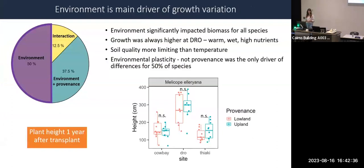The main result - which we might have expected - is that the environment or planting site was the main driver of growth variation. However, 50% of species were only impacted by the environment with no provenance-level differences. For example, Malachopilariana showed much higher growth at the DRO - the lowland, warm, wet, high-nutrient site - compared to the other two sites, and this was a similar trend for all species. Some species varied slightly between Cow Bay and the Yaki site, but for the majority there were no differences between those two sites, which suggests soil quality may be more limiting than temperature.